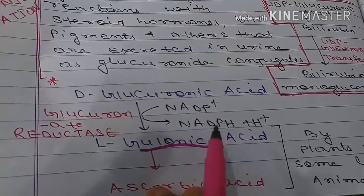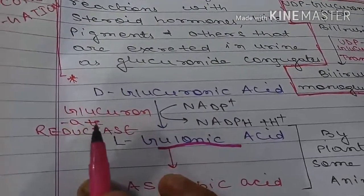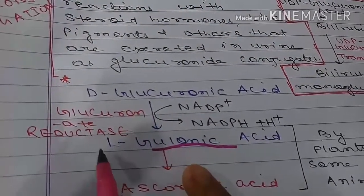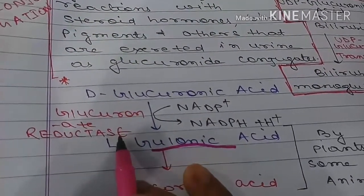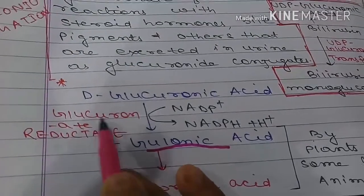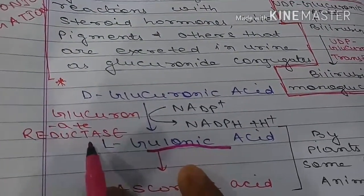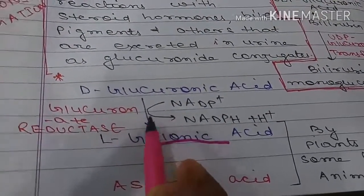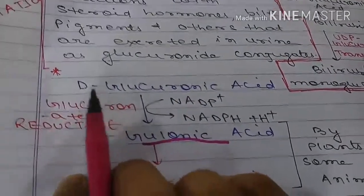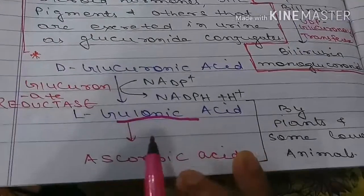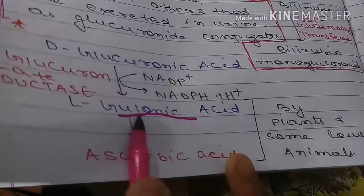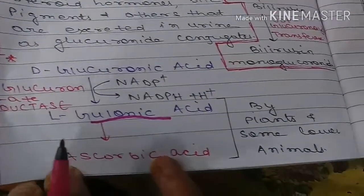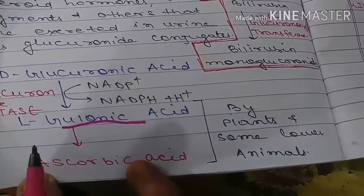D-glucuronic acid undergoes reduction using NADPH, and the enzyme glucuronate reductase converts D-glucuronic acid to L-gulonic acid.